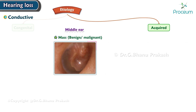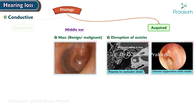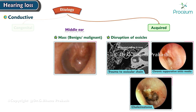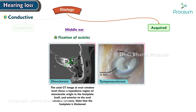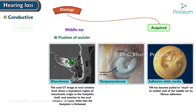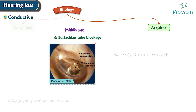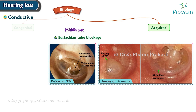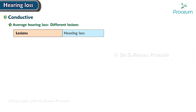A mass in the middle ear may be a benign or malignant tumor. Disruption of ossicles can occur as in trauma to the ossicular chain, chronic suppurative otitis media, or cholesteatoma. Fixation of ossicles occurs in conditions like otosclerosis, tympanosclerosis, and adhesive otitis media. Eustachian tube blockage may result from a retracted tympanic membrane or serous otitis media.